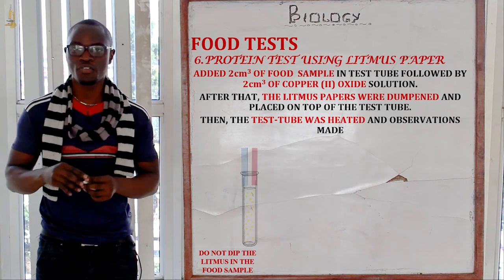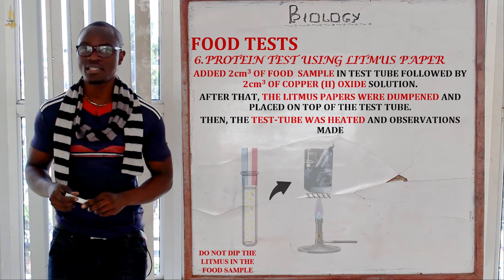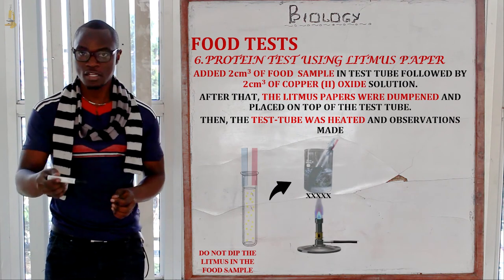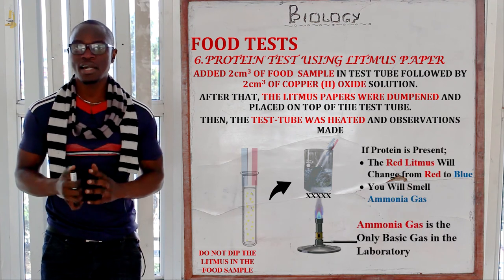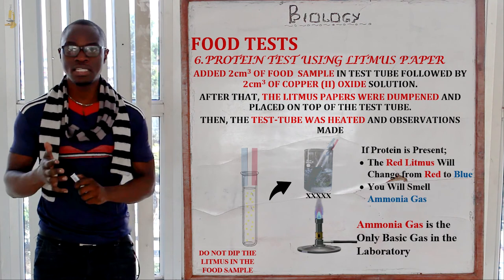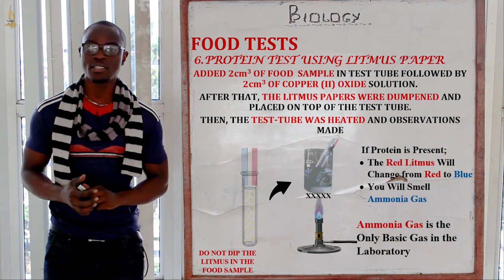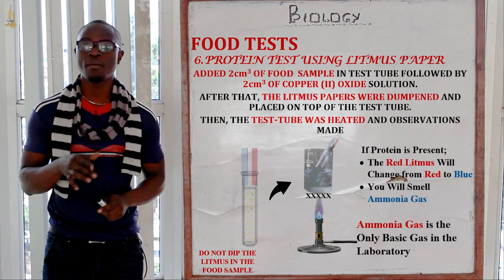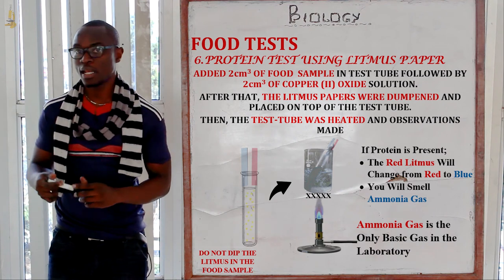After placing the lead acetate papers on top of the test tube, heat the test tube in a warm water bath and record your observations. If protein is present in the sample, the red lead acetate paper will change from red to blue, indicating the presence of protein. If you smell the contents, you will detect the smell of ammonia gas — it is the ammonia gas that is responsible for turning the red lead acetate paper to blue.